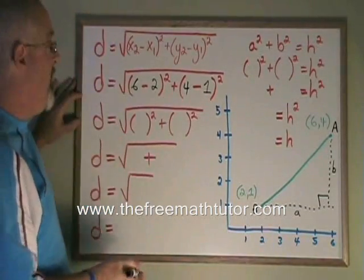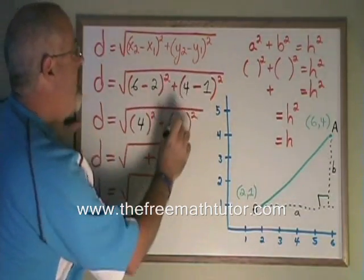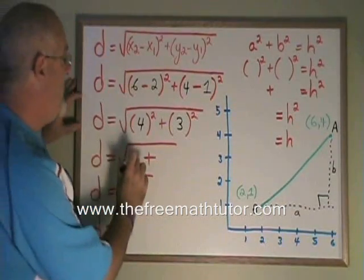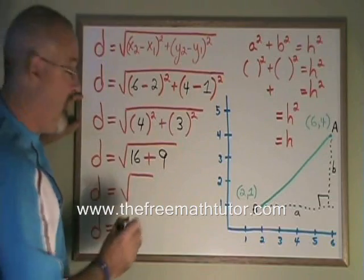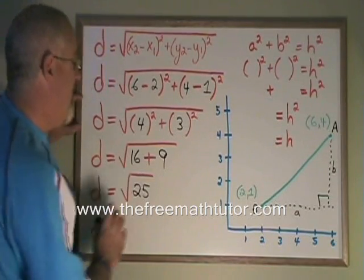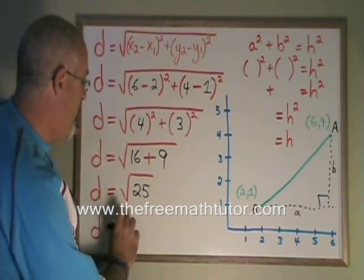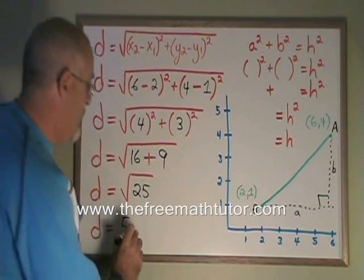Now, simplifying, 6 minus 2 is 4, 4 minus 1 is 3, 4 squared is 16, 3 squared is 9, and 16 plus 9 is 25. The square root of 25 is 5. We know our distance. Our distance is 5 units.